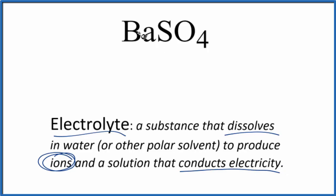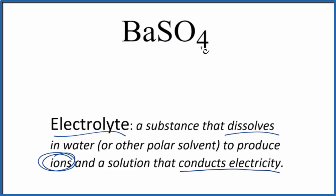Barium is a metal, and then our sulfate ion is a polyatomic ion — a group of non-metals. So a metal and non-metals: this is going to be ionic. So we have ions. The question is, when we put it in water, will it dissolve and dissociate — break apart into those ions?